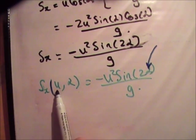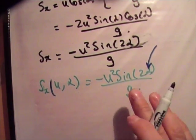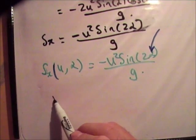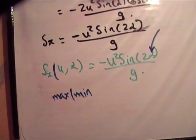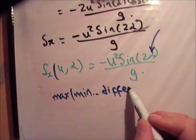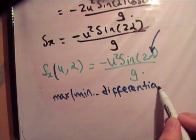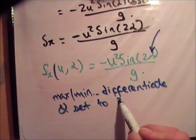And this here is a function of u and alpha, two variables. But we want to find the maximum angle, or the angle for maximum projection. So, for maximum, or a minimum, differentiate and set to zero.